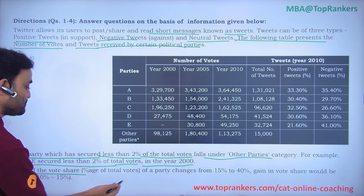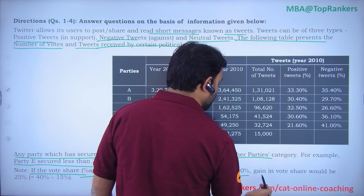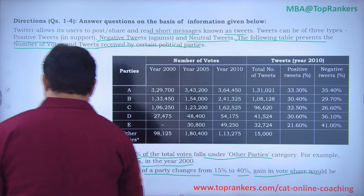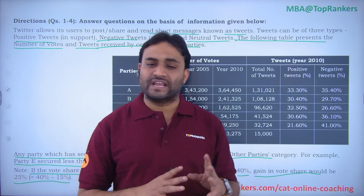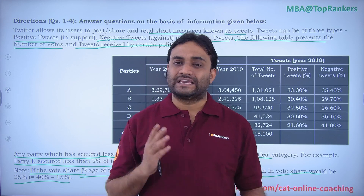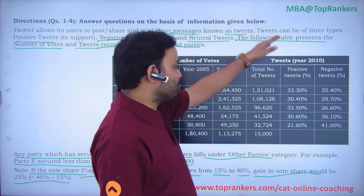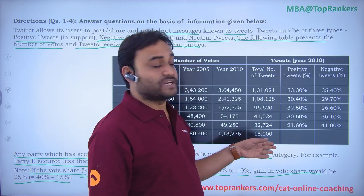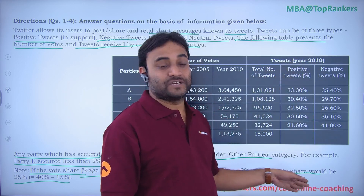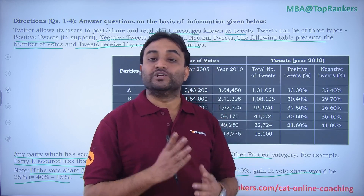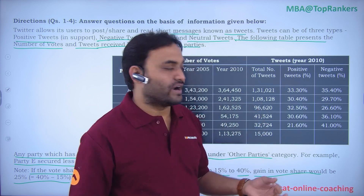If the vote share of a party changes from 15 percent to 40 percent, the gain in vote share would be 25 — it's just the basic difference. For any two years, to find gain in vote share, you simply take the difference of those two years' percentages. For tweets, the total number of tweets is given, along with positive and negative tweet percentages, so we can find the neutral tweet percentage and then its value if required.